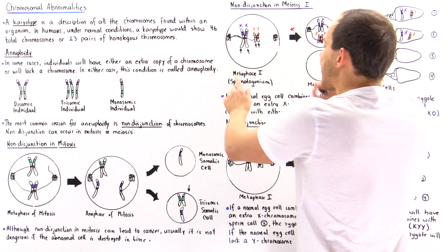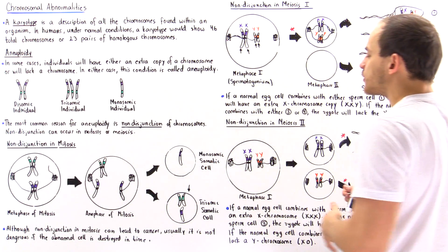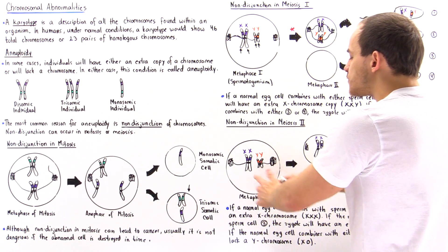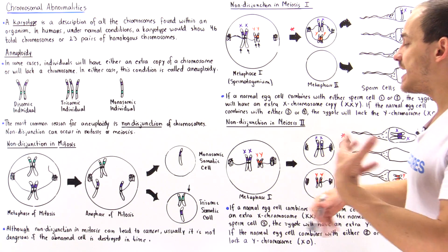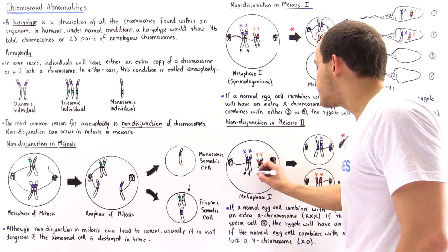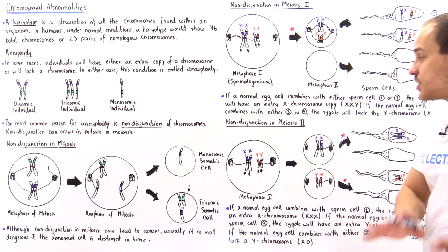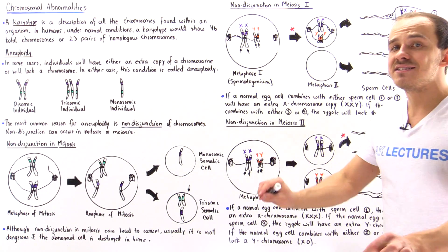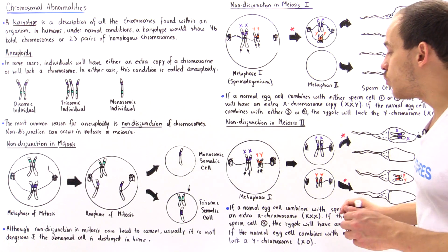Let's begin with the same exact spermatogonium, the same exact precursor cell. Once again, we're not considering the autosomes — we're only looking at the sex chromosomes. So we have replication taking place, and we produce these two identical sister chromatids.